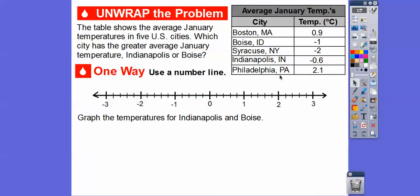So Indianapolis is negative 0.6. Here's zero, here's negative one. This is divided up into five sections, going by two tenths: two, four, six, eight, and ten tenths right there. So Indianapolis is going to be at negative six tenths right there. And then negative one is Boise right there. We marked Boise with a B and Indianapolis with an I.